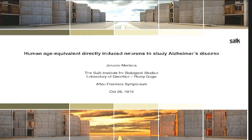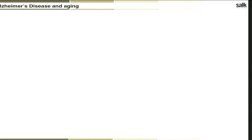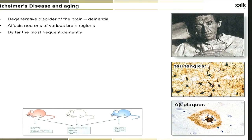Alzheimer's disease is a fatal neurodegenerative disorder affecting all regions of the brain — it's essentially a loss of brain in the end. It is by far the most frequent dementia and a growing problem with the aging population, especially in industrialized countries, where cases continue to increase. We don't really have a solution yet.